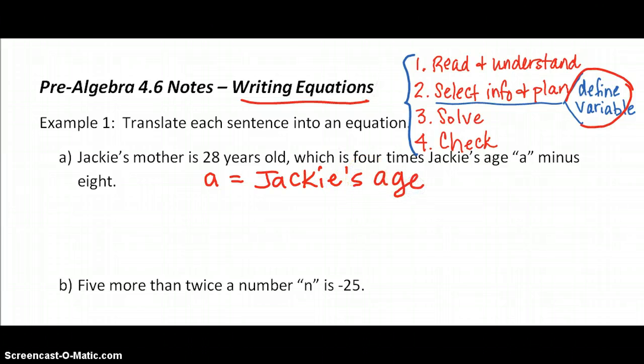Now I'm going to read that sentence one more time and highlight some very important words. Jackie's mother is 28 years old, which is 4 times Jackie's age minus 8. And 8 would be another number that's important. So I hate to highlight too much, but for sure I heard the word is, which always represents an equal sign, is 28. Somebody is 28. Jackie's mother.